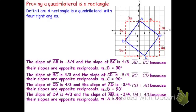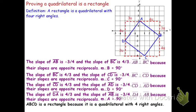I've now shown that I have four right angles. The measure of angle B is 90 degrees, the measure of angle C is 90 degrees, the measure of angle D is 90 degrees, and the measure of angle A is 90 degrees. If I have a quadrilateral with four right angles, then it's a rectangle. Thus, I conclude that ABCD is a rectangle because it's a quadrilateral with four right angles.